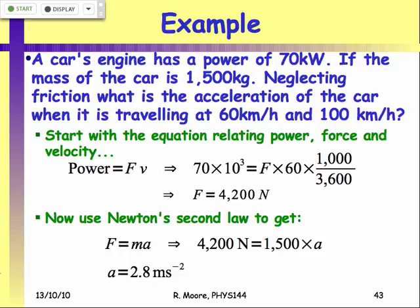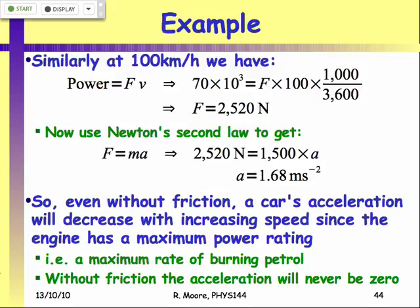Power equals force times velocity. We're told we've got a car engine with 70 kilowatts of power and a mass of 1,500 kilograms. We're asked what the acceleration is when traveling at 60 km/h or 100 km/h. We calculate the force using power equals force times velocity: 70 kilowatts at 60 km/h gives a force of 4,200 newtons. Then using Newton's second law we get 2.8 m/s² at 60 km/h and 1.68 m/s² at 100 km/h.